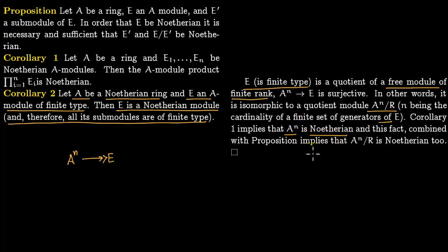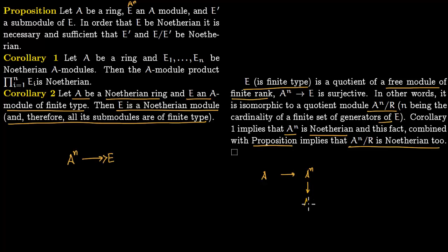Since A is Noetherian, we can take its copies to get A^n, which is Noetherian. Combined with the proposition, this implies A^n over R is Noetherian. So from a Noetherian ring A we constructed A^n which is Noetherian, and then A^n modulo R is Noetherian — that is E, our finite-type module. The submodule R comes from the surjective map, so E must be of the form A^n modulo R.